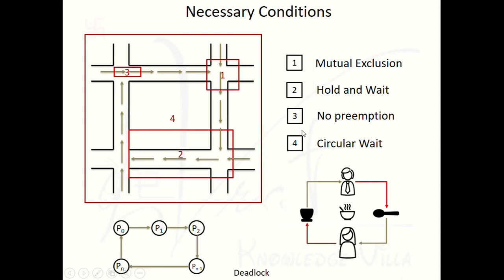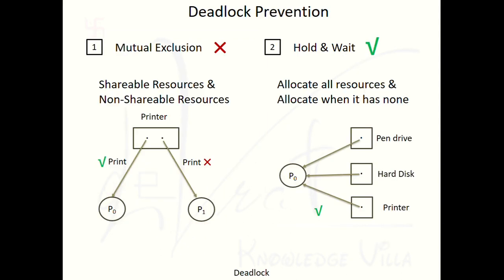If we are able to break any one condition out of these four, then we will definitely prevent the deadlock. In our earlier videos, we have already discussed the violation of mutual exclusion and violation of hold and wait.